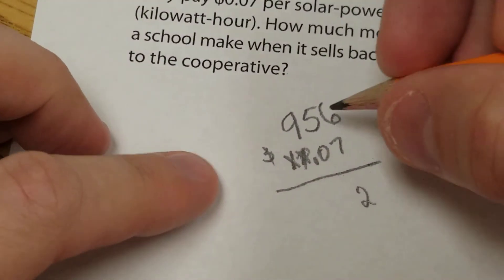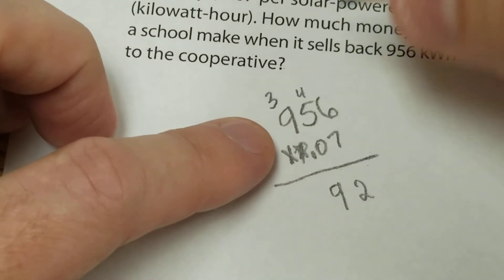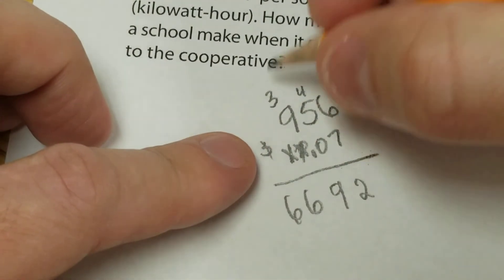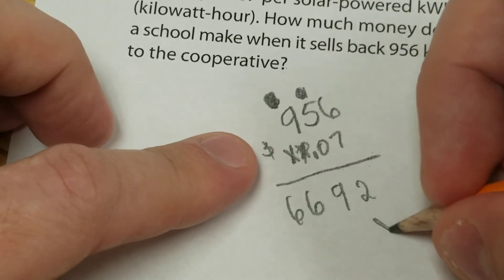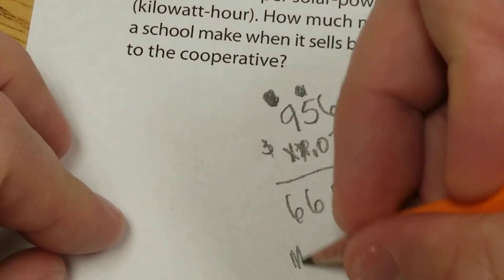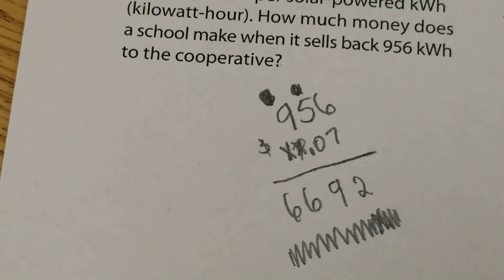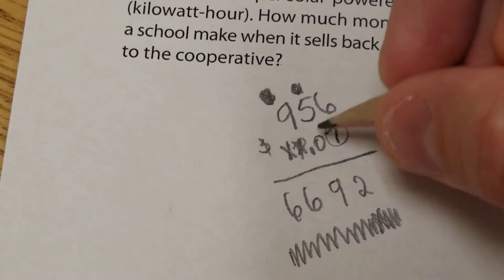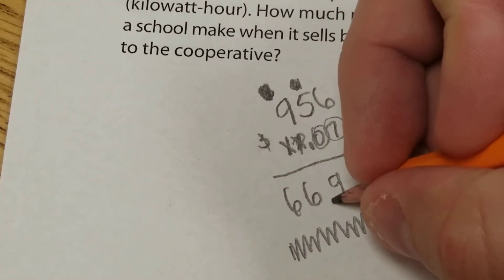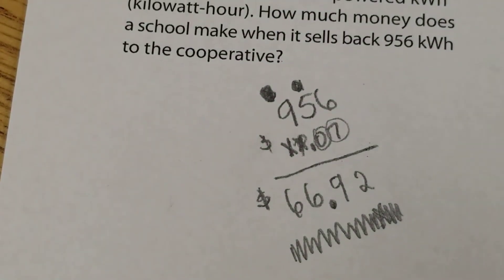So we just multiply. 7 times 6 is 42. Regroup my 4. 7 times 5 is 35, plus 4 is 39. 9 times 7 is 63, 63 plus 3 is 66. I'm going to get rid of my regroups. Put in my placeholder. Zero times everything is zero. So actually, I'm done. I'm just going to erase this. I didn't see that it was a zero before I did that. All right, so I'm finished with this problem. Now I have to put in my decimal. I have two decimal spots. So I start at the end and move over two decimal spots. And since this is money, I need to put my dollar sign on it. So we're going to get back $66.92.